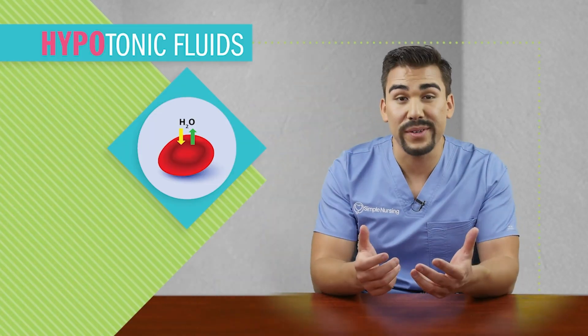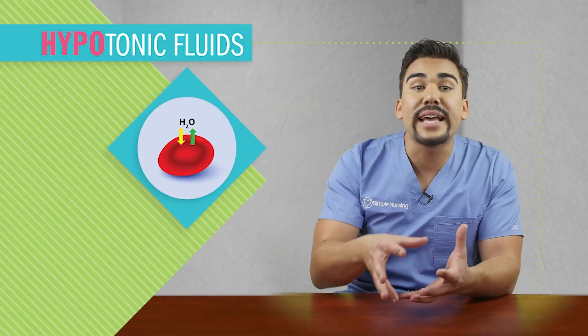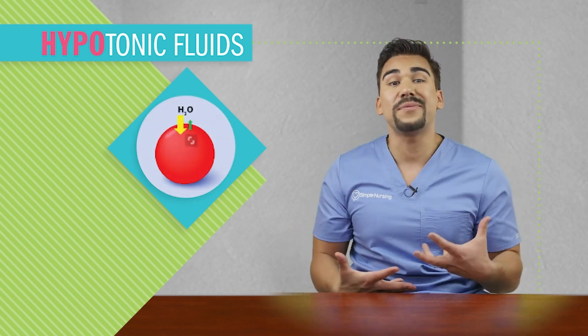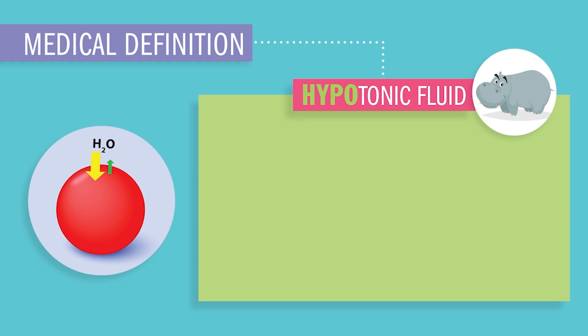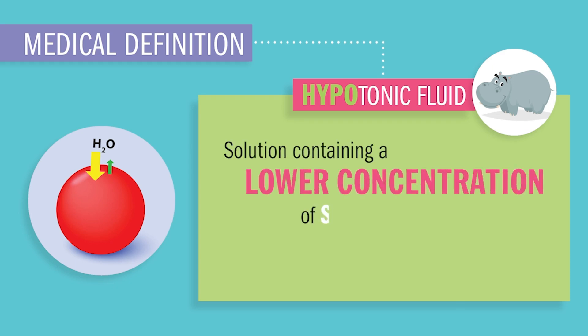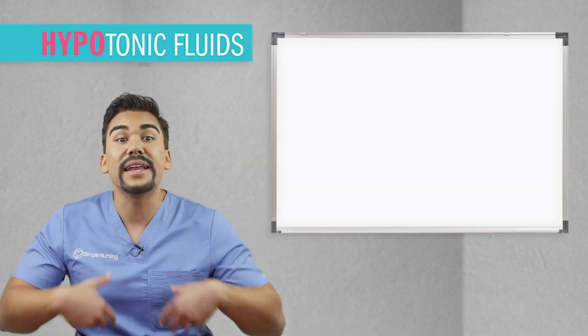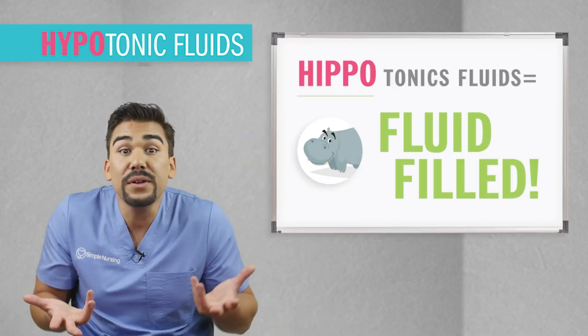First we have hypotonic fluids, which we call hippotonic fluid, because fluid goes into the cell making the cell swell — making it big and puffed up and swollen, just like a big hippo. Hypotonic fluids are solutions containing a lower concentration of salt or solute than ICF, basically diluted fluids having less salt and more water than your body fluids. The simplest way to remember this is hippos love water, and hypotonic fluids are filled with water.